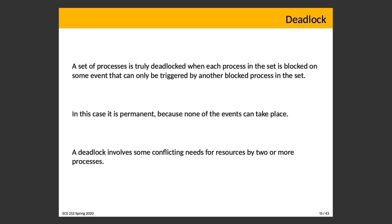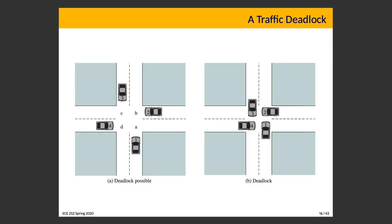A set of processes is truly and meaningfully deadlocked when each process in the set is blocked waiting on some event, and that event can only be triggered by another process also in that set. So if A is waiting for B, B is waiting for C, and C is waiting for A, that's a real deadlock — we can never break out of that loop. A deadlock is based around conflicting needs for resources by two or more processes or threads. Something like a semaphore or a file is a resource that we could get blocked waiting for, and if we do, it could lead to a deadlock.